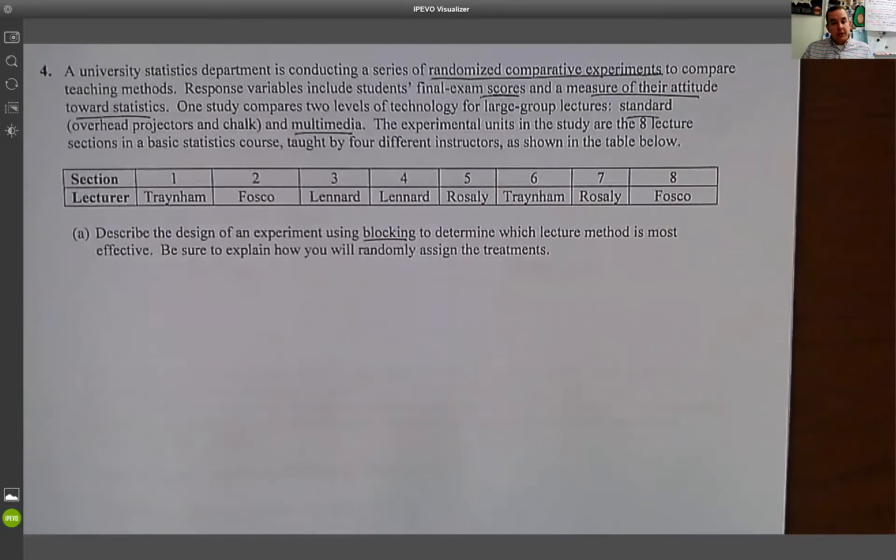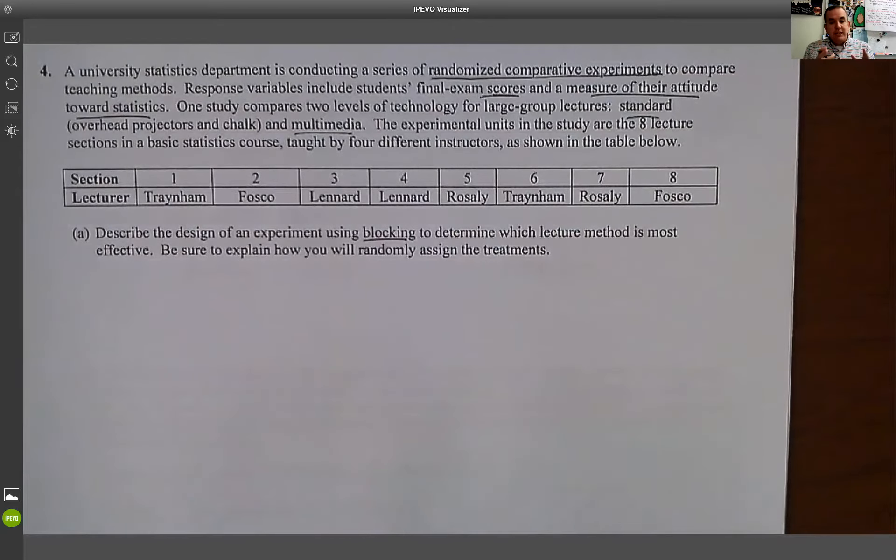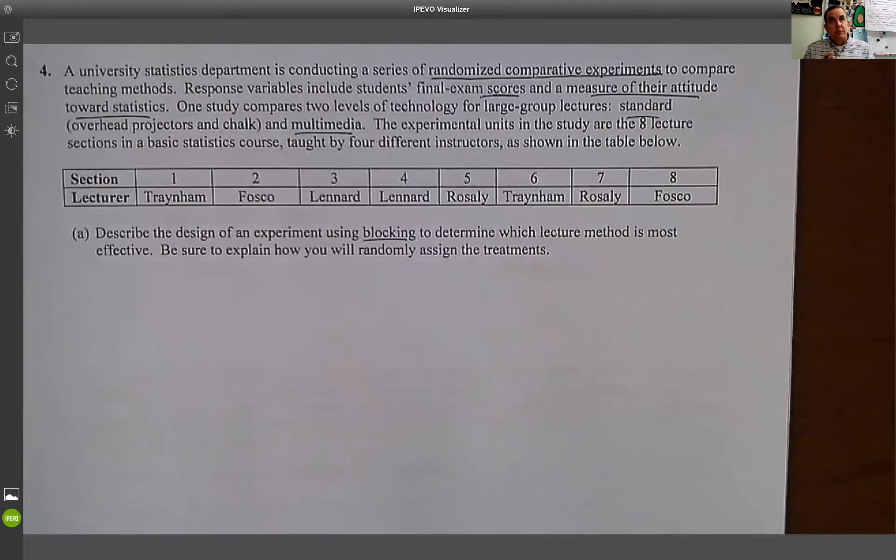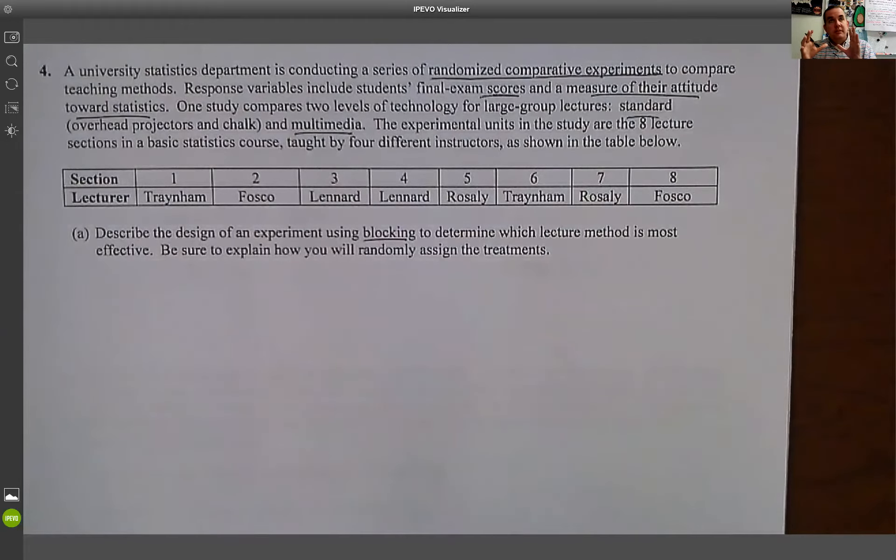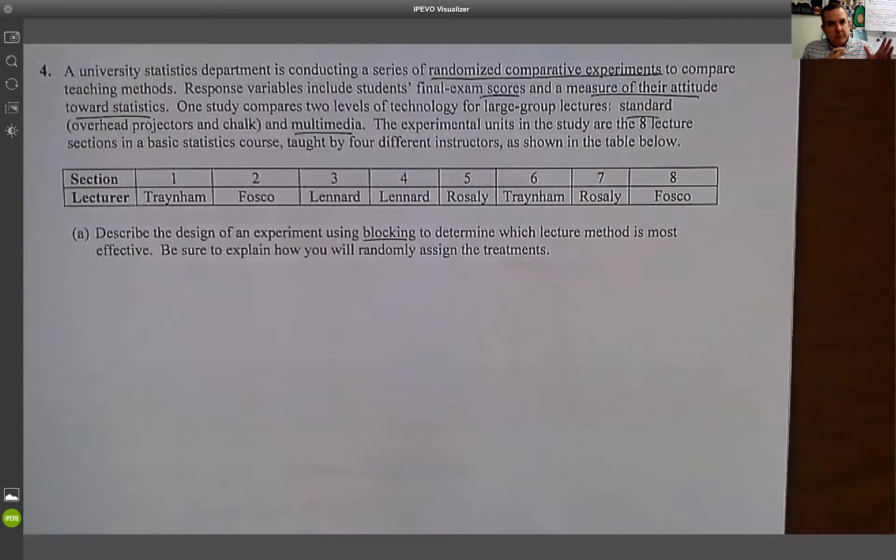So the first thing says, describe the experiment using a block to determine which lecture method is most effective. So block. Block is when we're going to break it into two separate groups based on some sort of factor or some idea that we believe is going to influence it.